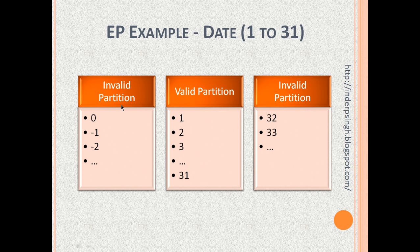You can pick any value from the first invalid partition — let us say minus 1 — and the system should reject that value, since minus 1 is not an acceptable date within the month. Then you pick any value from the valid partition from 1 through 31 — let us say 3 or 10 — and the system should accept it. Then you pick one value from the second invalid partition — let us say 34 — and the system should reject that value.